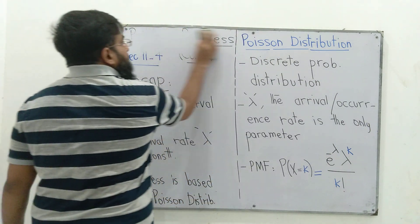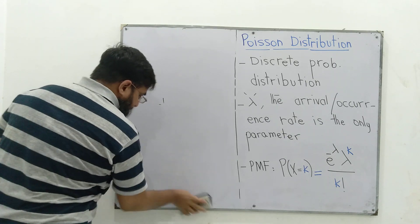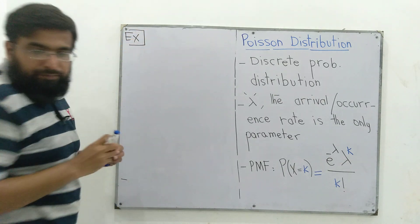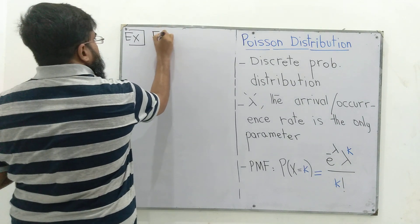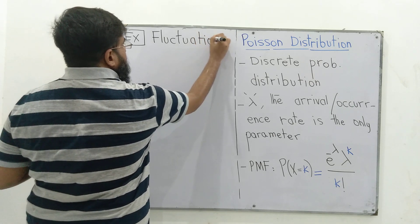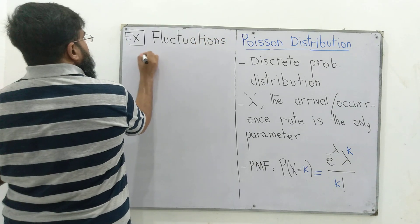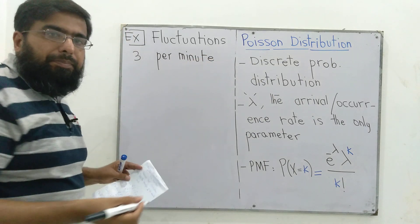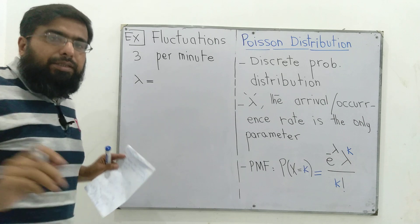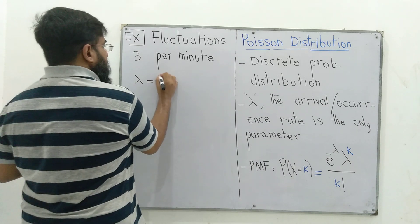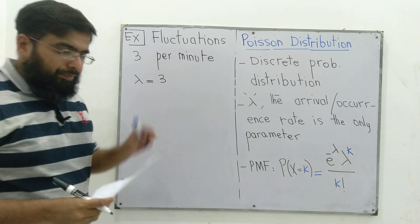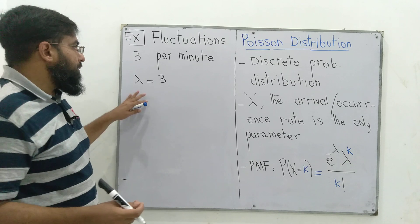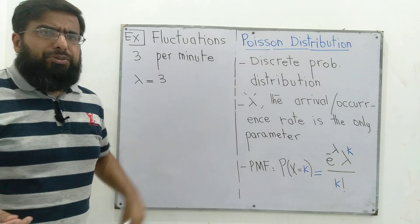To better understand the Poisson distribution, we go through an example. Fluctuations in AC voltage at my residence are noted to be three per minute. This means the process is random and lambda equals three per minute. So the parameter for this Poisson distribution is three.